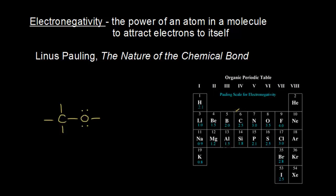Carbon has an electronegativity value of 2.5, and we're going to compare that to oxygen, which has an electronegativity value of 3.5. So oxygen is more electronegative than carbon, meaning oxygen has a greater power to attract electrons to itself. If you think about the electrons in the covalent bonds between carbon and oxygen, they're shared unequally — oxygen pulls those electrons closer to itself.